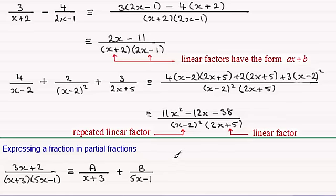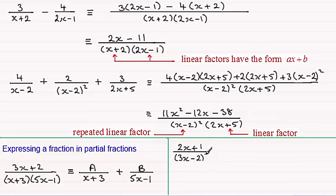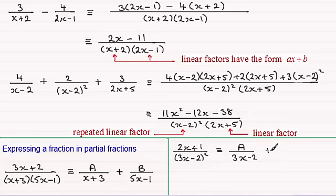For instance, if I were to take (2x + 1) divided by (3x - 2)² and express this in partial fractions — what we've got here is a repeated linear factor. So the partial fractions would be of the form: a constant A divided by (3x - 2), plus another constant B divided by (3x - 2)².